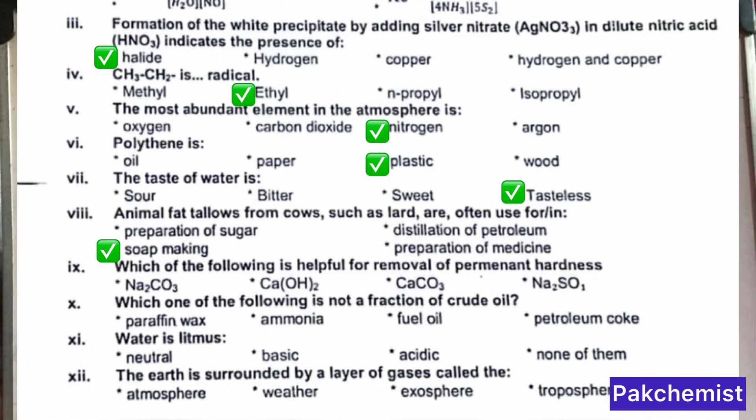MCQ 9: What chemical is used for permanent hardness? That is washing soda, or you can say soda ash — Na2CO3. MCQ 10: Which of the following is not a fraction of crude oil? When crude oil is heated and converted into fractions, the answer is ammonia.